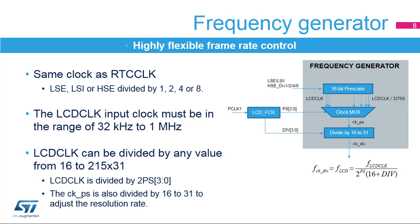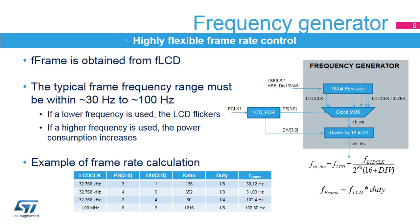LCD CLK is first divided by 2 PS[3:0]. If a finer resolution rate is required, the DIV bits [3:0] can be used to divide the clock further by 16 to 31. In this way, you can roughly scale the frequency and then fine-tune it by linearly scaling the clock with the counter. The output of the frequency generator, FCKDIV, constitutes the time base for the entire LCD controller. It is equivalent to the LCD phase frequency. The frame frequency, or F-frame, is determined by dividing FCKDIV by the number of active common terminals, or multiplying it by the duty rate. The typical frame frequency must be selected to be within a range of around 30 to 100 Hz. The selected frequency must be a compromise between an acceptable refresh rate that avoids flickering, and the power consumption, which increases with the frequency. The following table shows examples of frame rate calculations by specifying PS[3:0] and DIV[3:0] values for different LCD CLK frequencies.